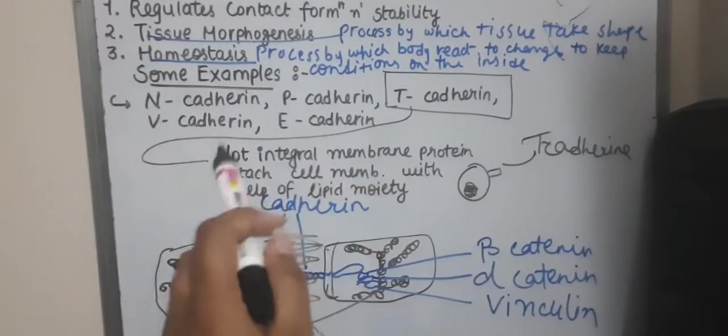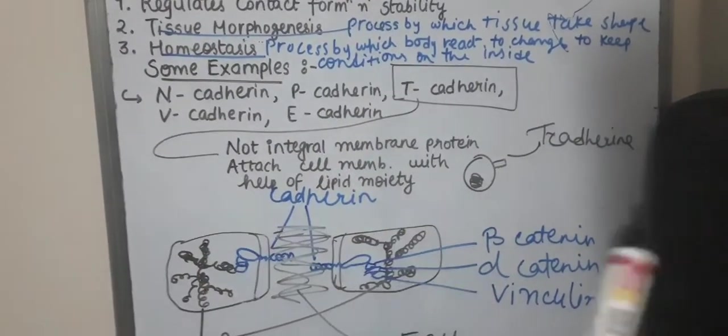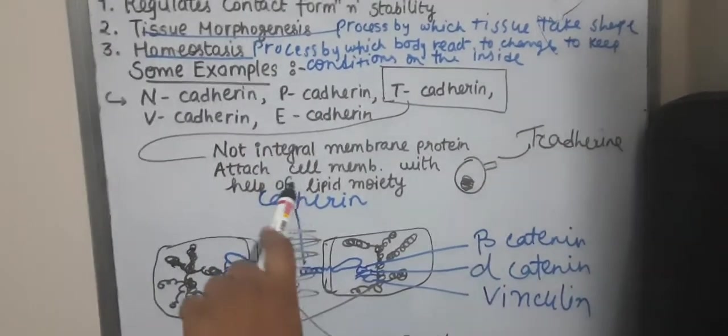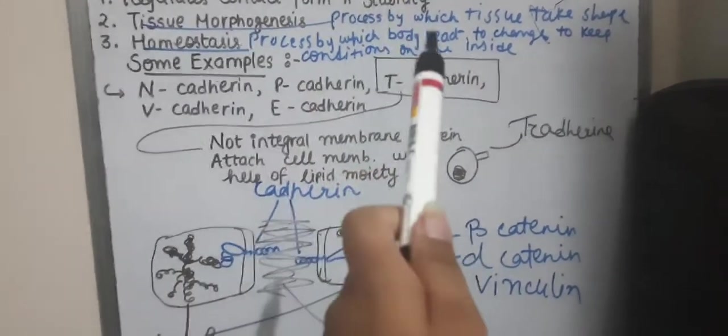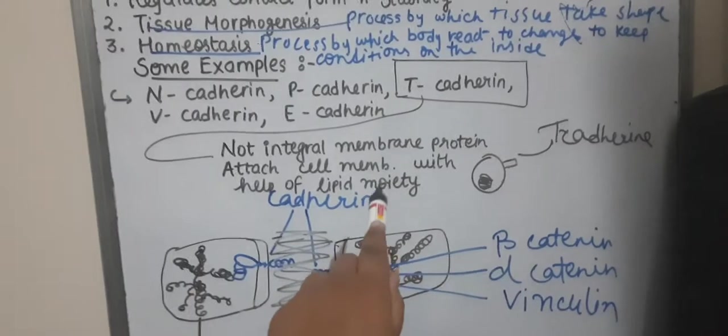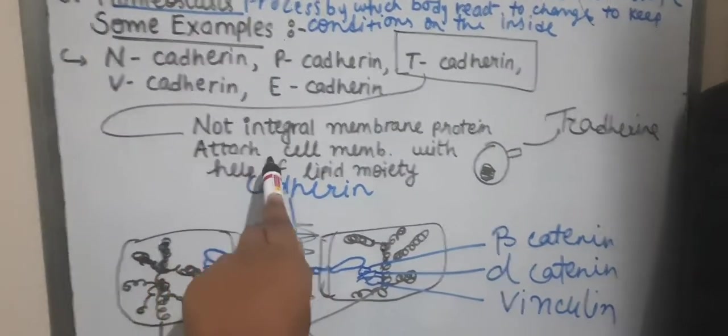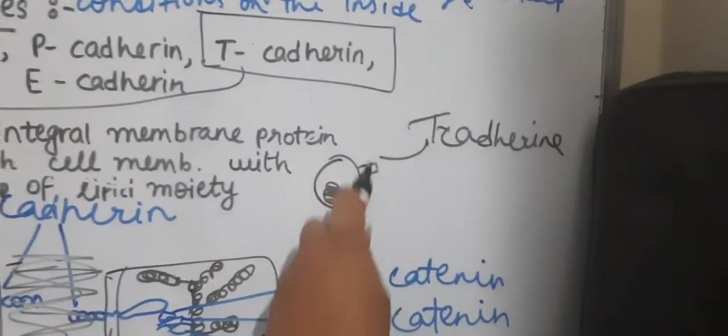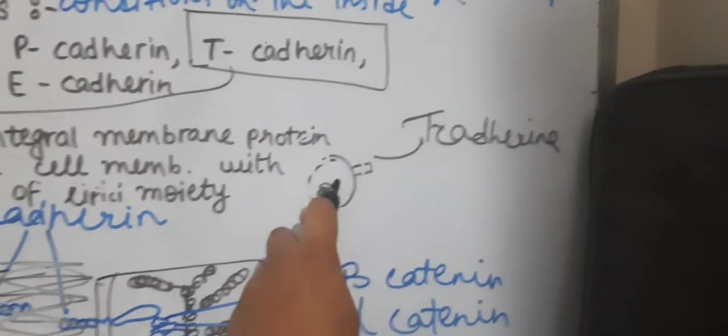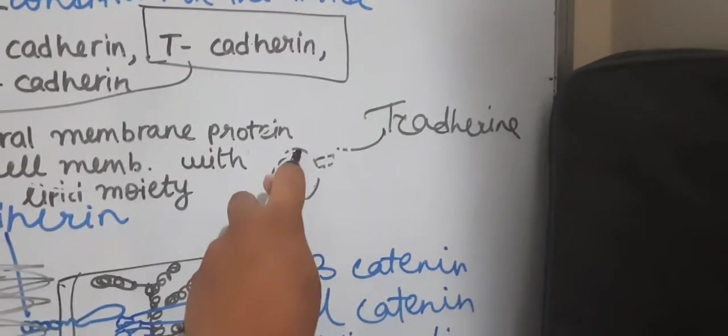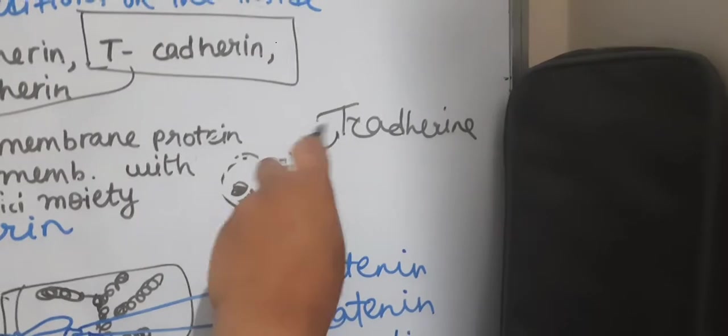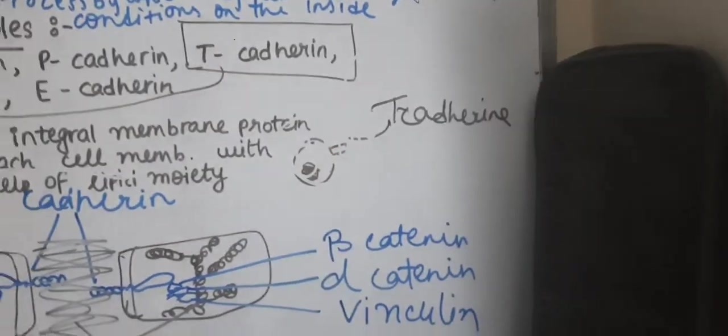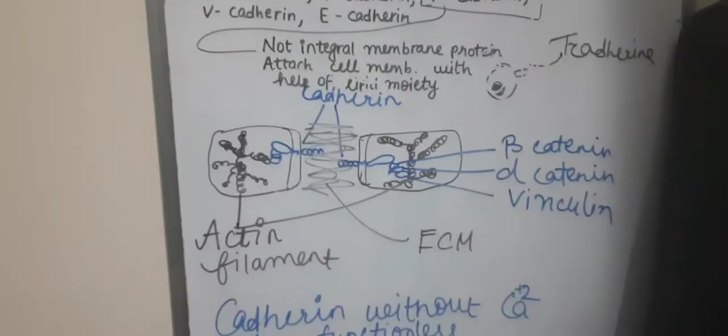So this one is not an integral membrane protein and this one will attach differently, that's why I have discussed it here. So this one will attach to the cell membrane with the help of lipid moiety. So this is the cell, this is the membrane, and here it will form a lipid moiety and it will attach with the lipid moiety - T-cadherin will attach with the help of a lipid moiety.